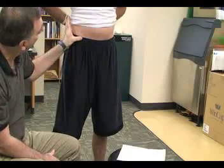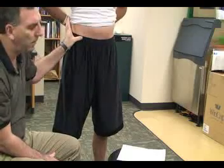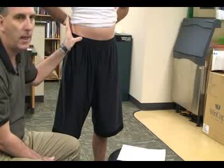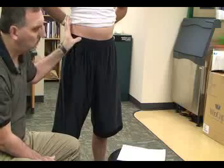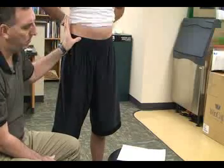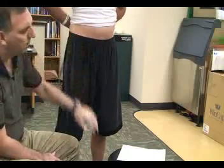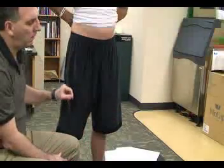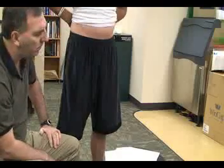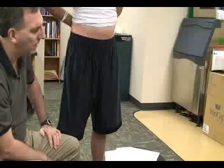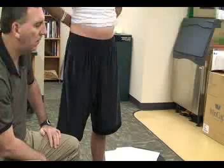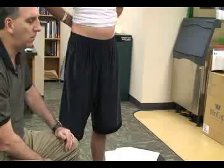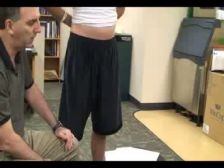Just about an inch inferior to that we have our anterior inferior iliac spine, or AIIS. This may not always be palpable. We also have our pubic bones, which would be in the center — following the femoral crest down to the pubic bone, it's under the pubic fat pad and superior to the genitalia.